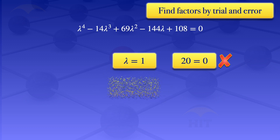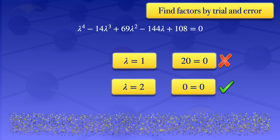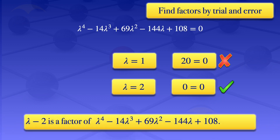We try λ = 2. Substituting λ = 2 gives 16 - 112 + 276 - 288 + 108 = 0, which is true. So (λ - 2) is a factor of λ⁴ - 14λ³ + 69λ² - 144λ + 108.